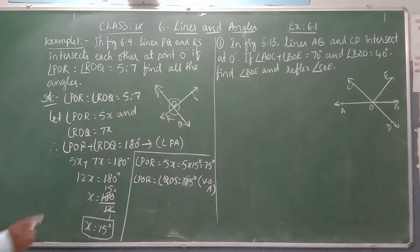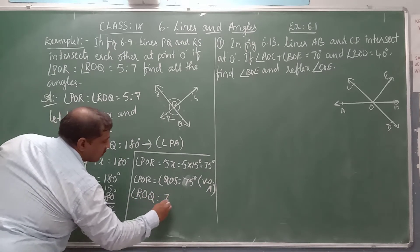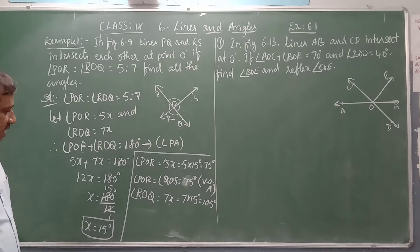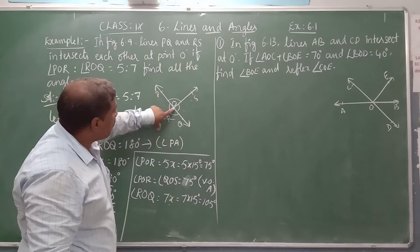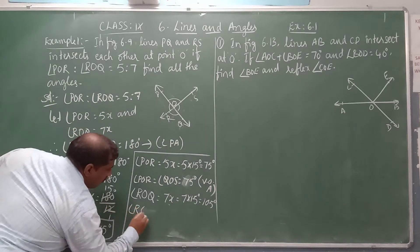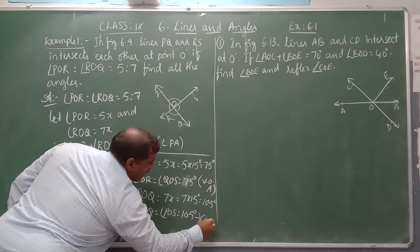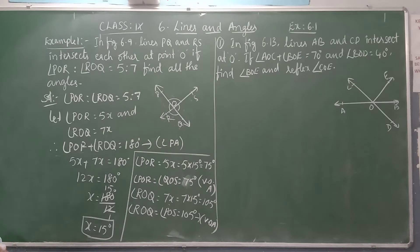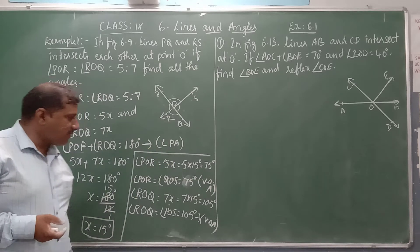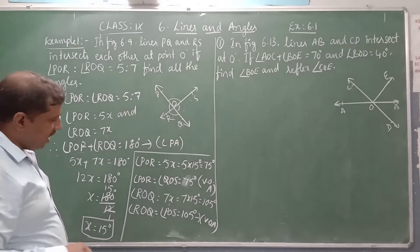Similarly, for the remaining two angles: angle ROQ equals 7X, that is 7 into 15, which is 105 degrees. What about angle POS? Since these two are vertically opposite angles, angle ROQ equals angle POS, which is also 105 degrees. So the four angles are 75 degrees, 75 degrees, 105 degrees, and 105 degrees.